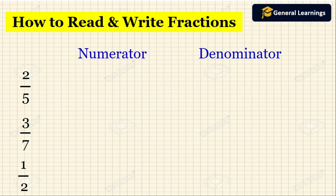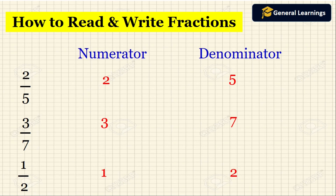Now we are going to identify the numerator and denominator for given fractions. For 2 by 5: the numerator is 2 and the denominator is 5. For 3 by 7: the numerator is 3 and the denominator is 7. For 1 by 2: the numerator is 1 and the denominator is 2. I hope you now understand how to read and write fractions.